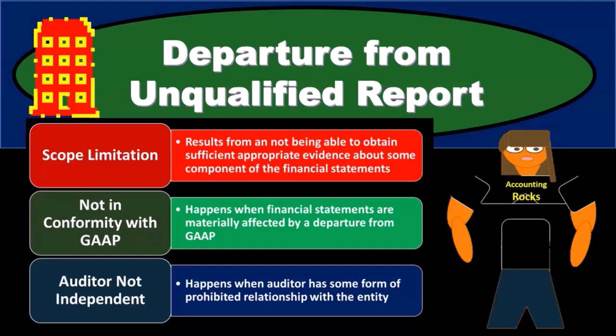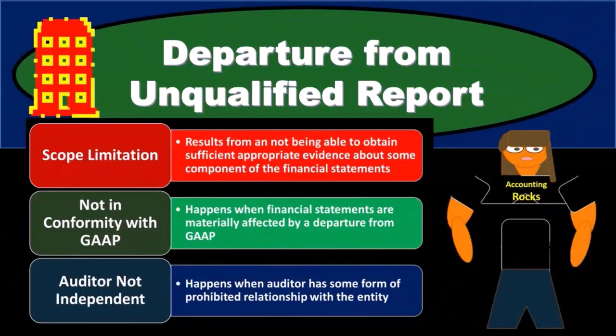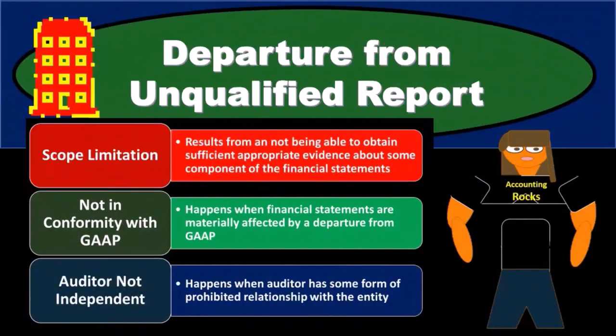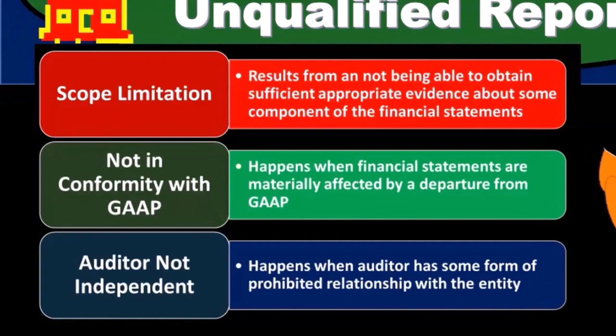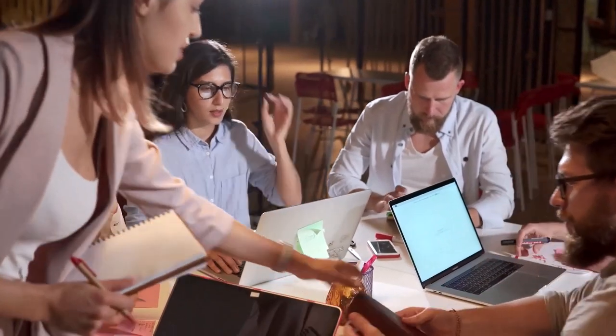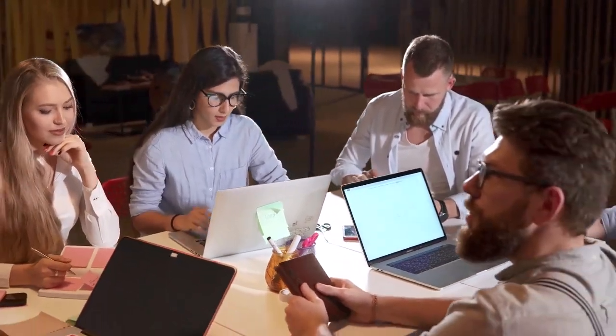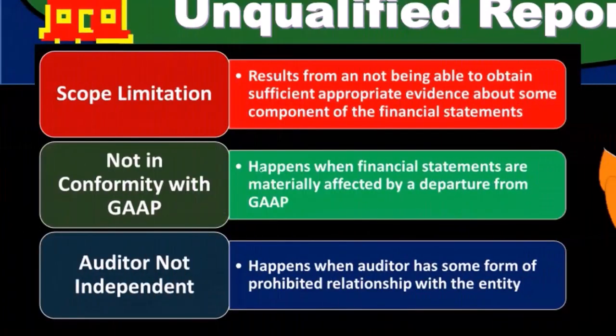In this presentation, we will take a look at situations where there is a departure from a standard unqualified report — a standard unqualified opinion — recalling that the standard unqualified opinion is the most common opinion. Within the audit engagement, management is basically saying the financial statements are put together in accordance with generally accepted accounting principles. Our goal is to gather evidence and give an opinion on whether that is indeed the case, and usually we would give the standard unqualified opinion, meaning the reports do appear to be in all material respects in accordance with generally accepted accounting standards.